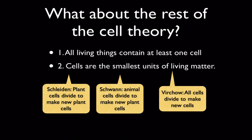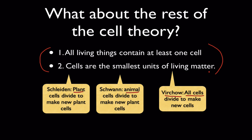So if we combine these ideas: Schleiden did the plants, Schwann did the animals, and Virchow worked with all cells. The work of these three scientists is where we get these two ideas of the cell theory. What I want you to see in these videocasts is that the cell theory didn't just fall out of the sky fully formed — it evolved over at least 400 years of work done by many different people in many different countries.